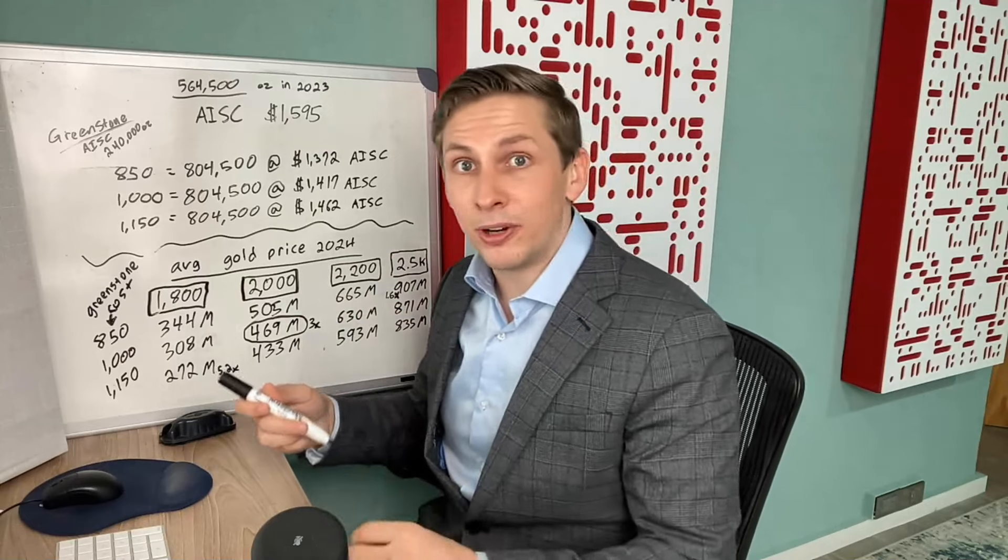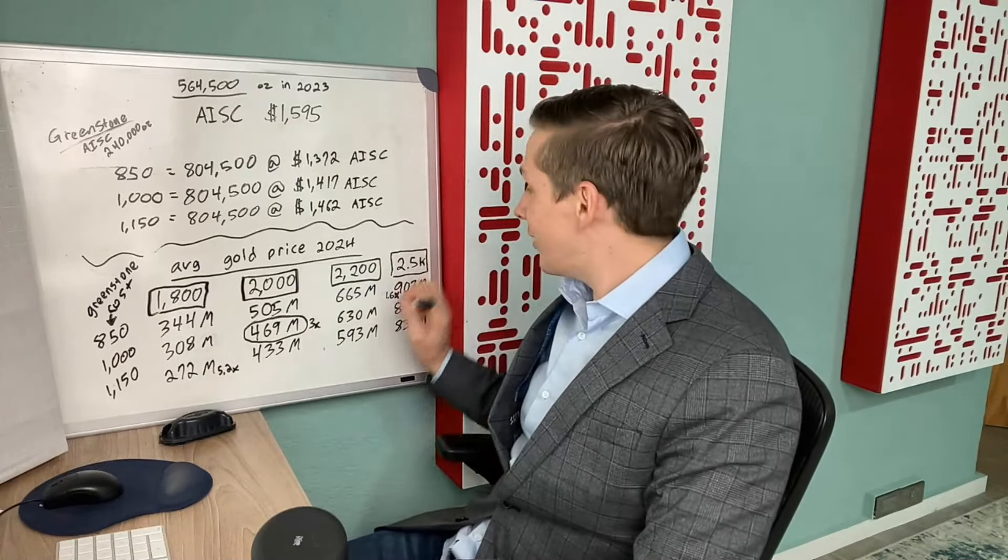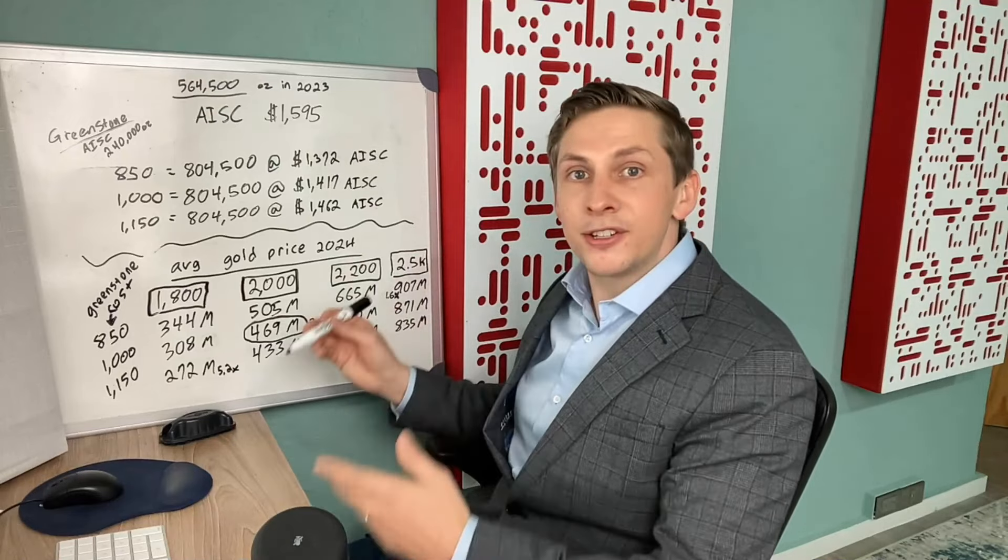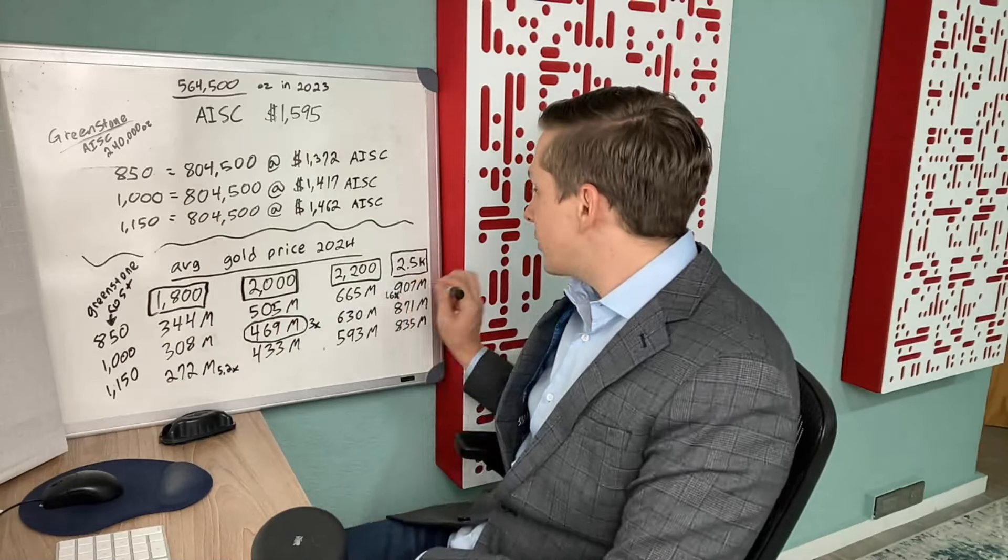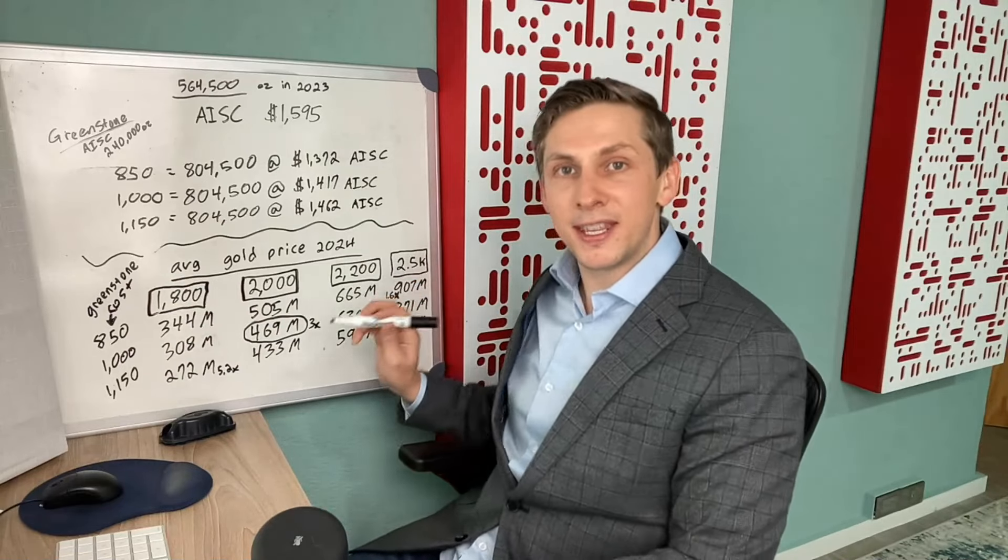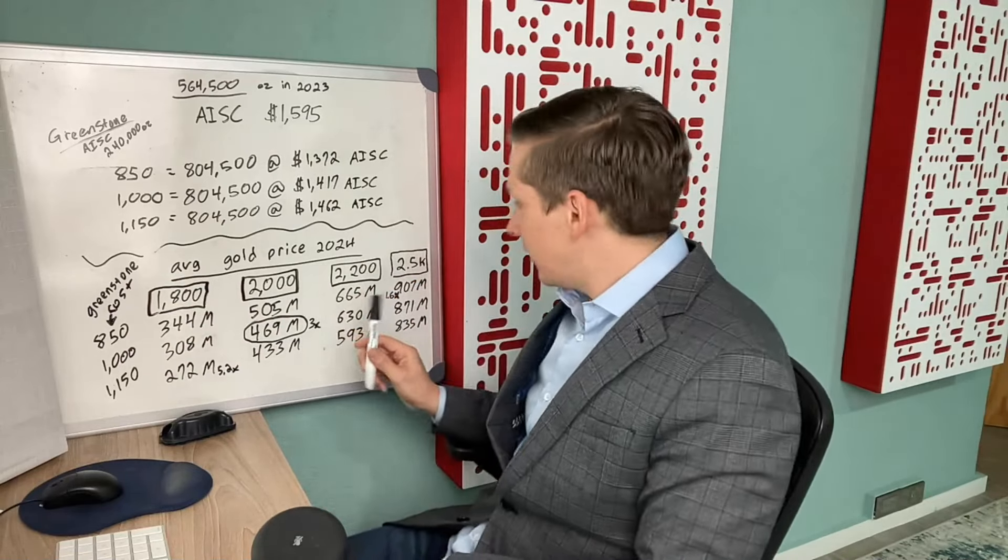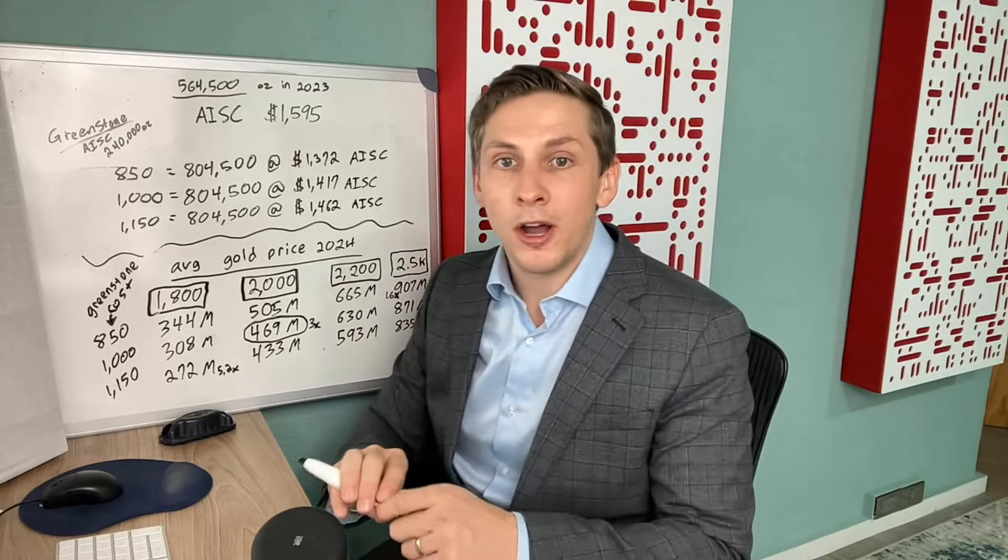Now let's say we have a pretty high gold price in the coming year and the average price of gold is $2,500 an ounce and Greenstone costs come in at the low end of $850. The company would have a cash flow of $907 million a year. So that's a cash flow multiplier based on today's market cap of 1.6.